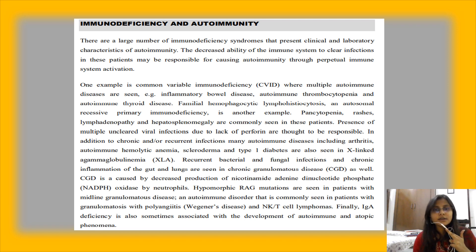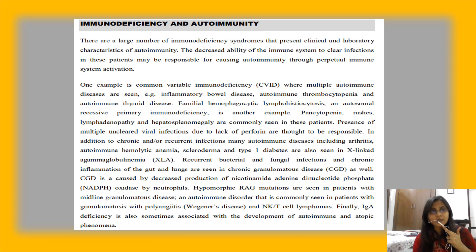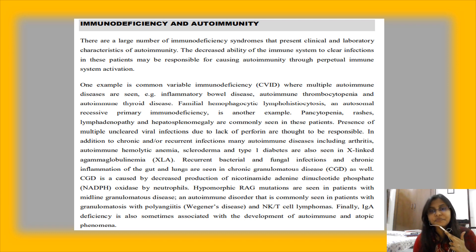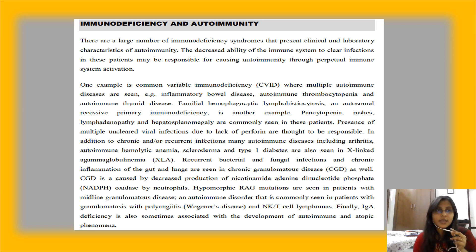Chronic granulomatous disease is caused by decreased production of NADPH — nicotinamide adenine dinucleotide phosphate — oxidase by neutrophils; this could also be an MCQ. We also have hypermorphic RAG mutations, present in patients with midline granulomatous diseases and autoimmune conditions, commonly seen in granulomatous polyangiitis, also known as Wegener's disease. Finally, IgA (immunoglobulin A) deficiency is also sometimes associated with the development of autoimmune and atopic phenomena.